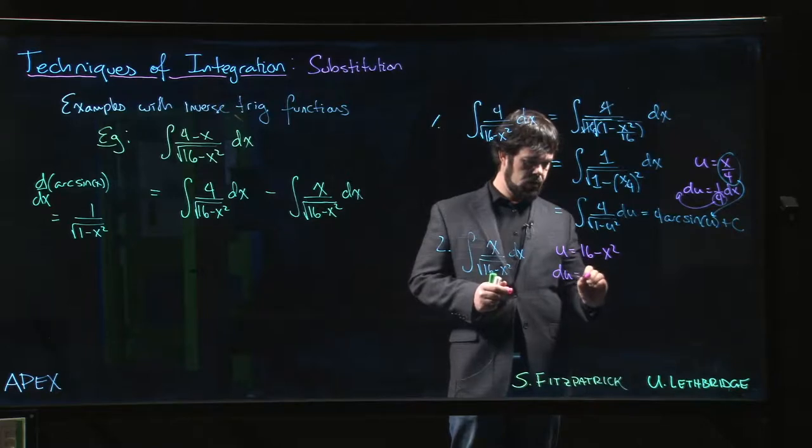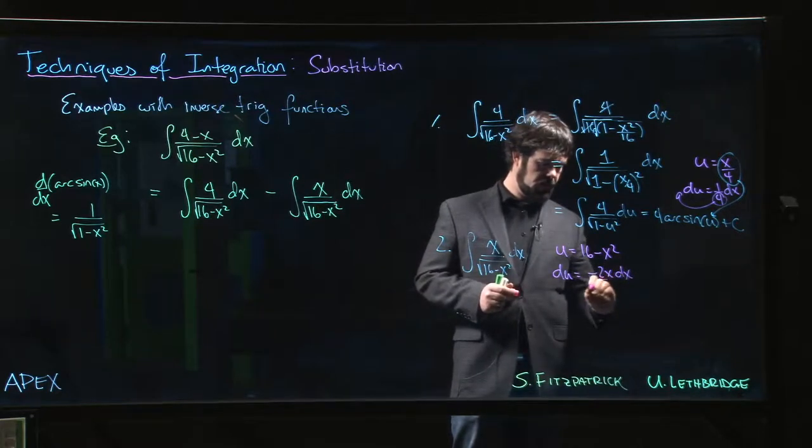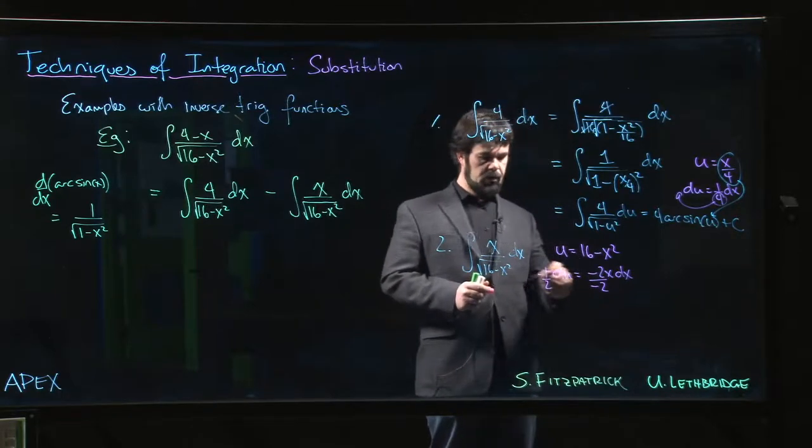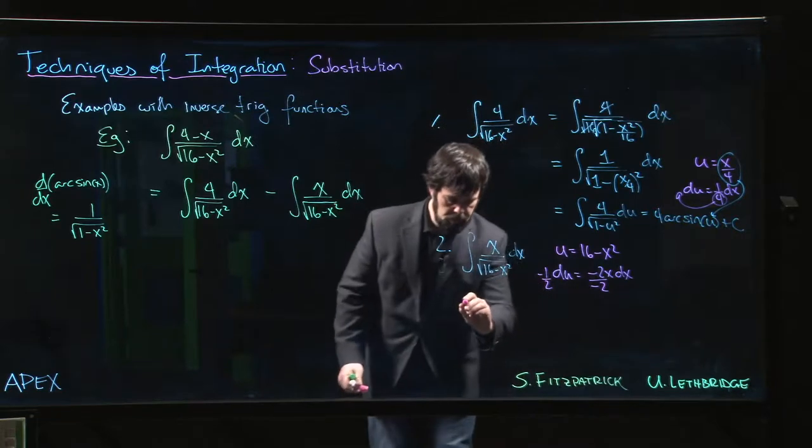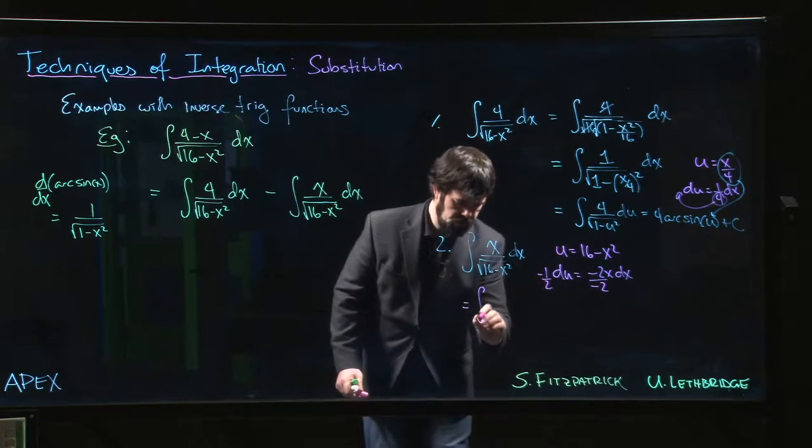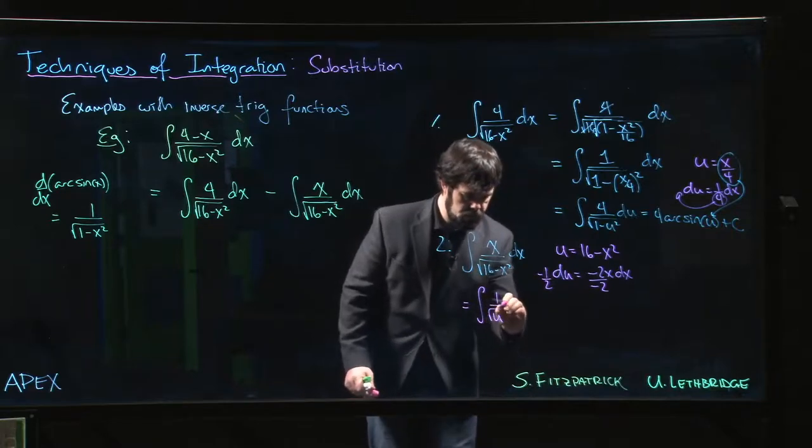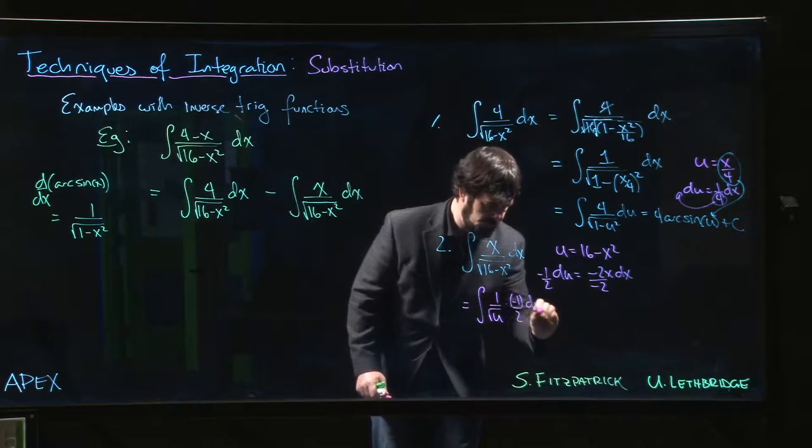So that du is minus 2x dx. Divide both sides by minus 2. x dx will be minus 1 half du. And so we get 1 over square root of u times minus 1 half times du.